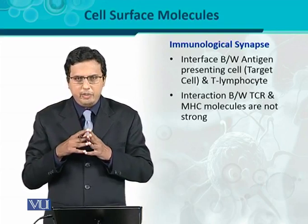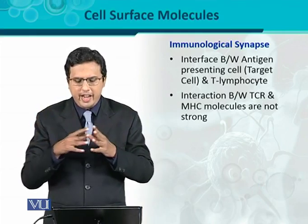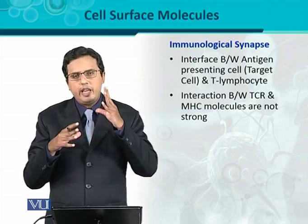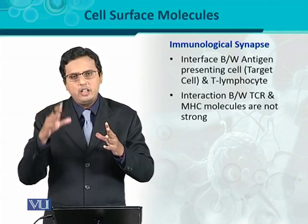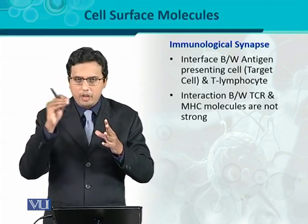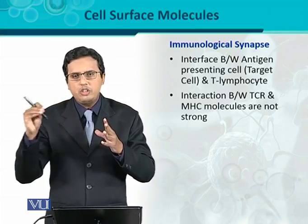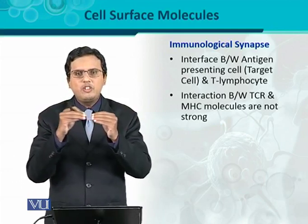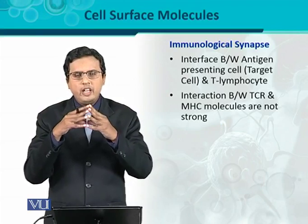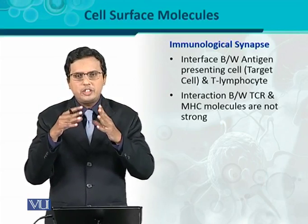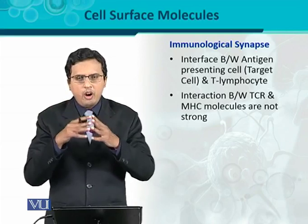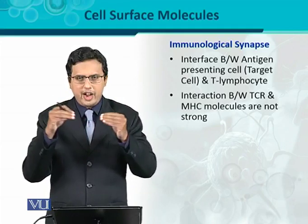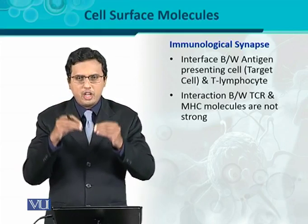The interaction between the TCR — the T-cell receptor — and MHC is not so strong. When an antigen is presented in association with MHC to the TCR on the T-cell surface, that binding is not very strong — it is a weak binding. So to strengthen it, there is a need for additional surface molecules to make that interaction more stable and strong.